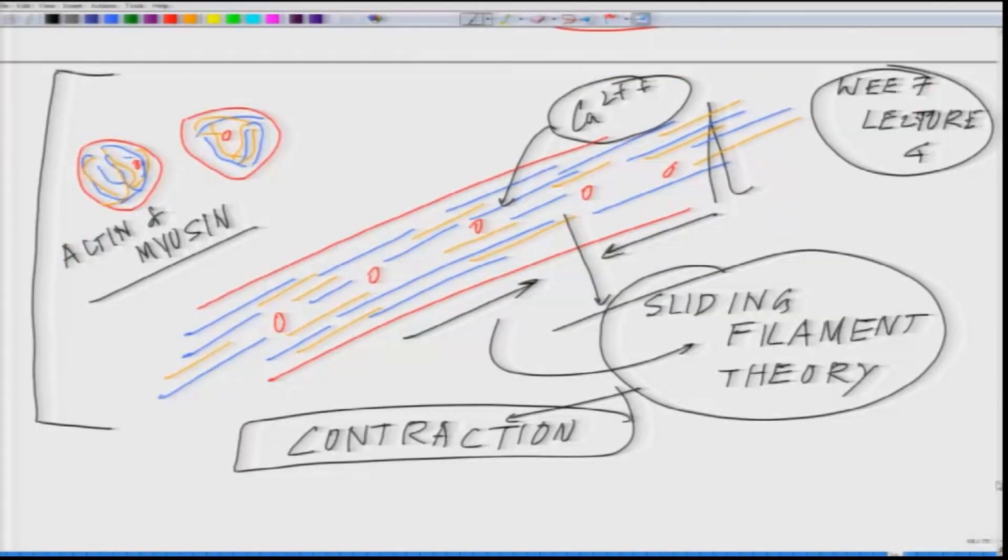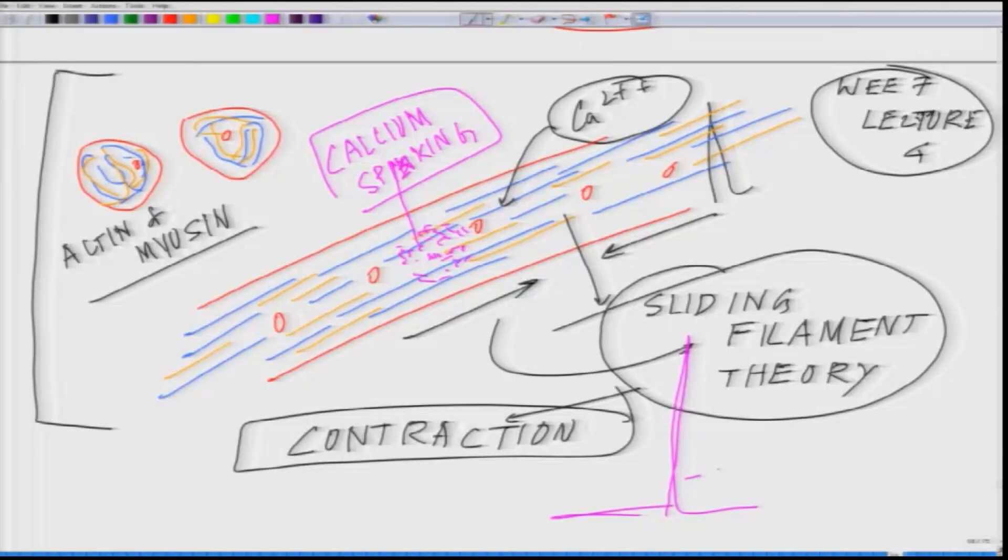For the sliding filament to happen, at a particular time there will be calcium spiking. These dots are showing the calcium spike. It's a very transient spike - it happens like this and falls like this, very very transient.